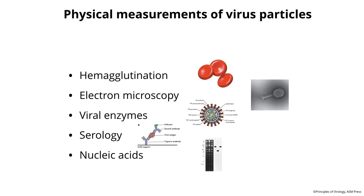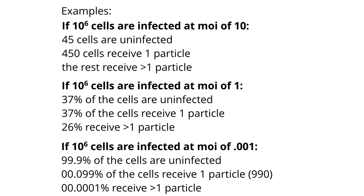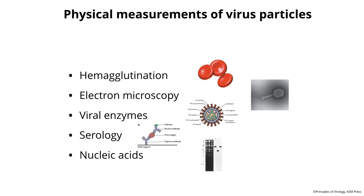Beyond infectivity assays, there are other physical measurements to quantify viruses. These include hemagglutination, counting particles by electron microscopy, measuring viral enzymes present in particles, serology using antibodies, and detecting viral nucleic acids — we have many great technologies for that.